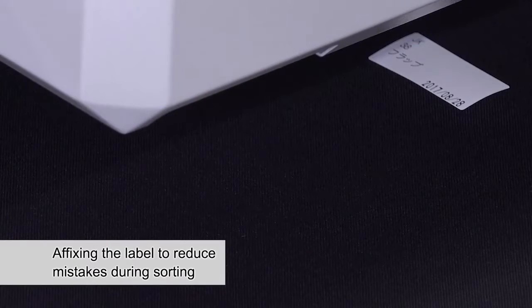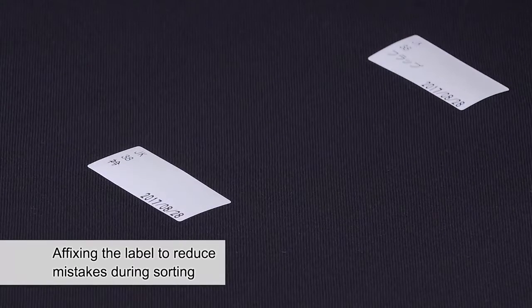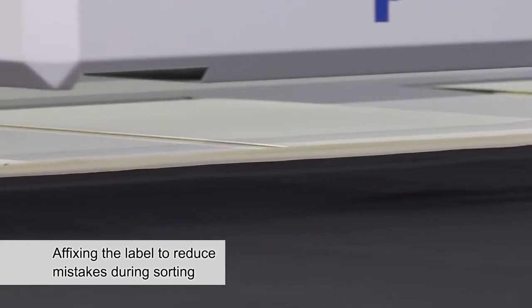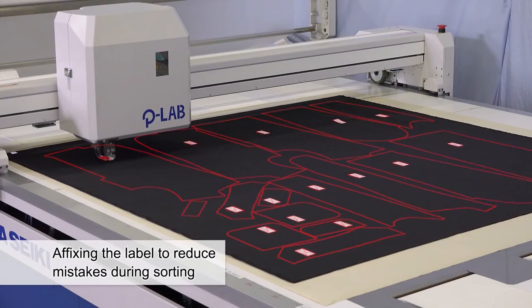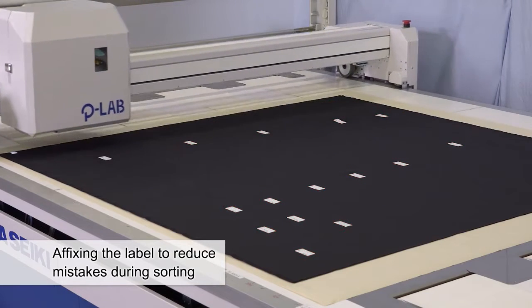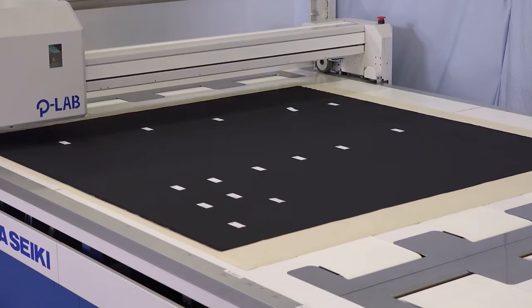P-Lab prints essential information such as part number and size onto labels and affixes them automatically to the fabric. These labels enable you to sort parts easily and minimize the possibility for mistakes during sorting.